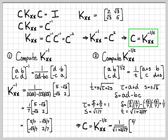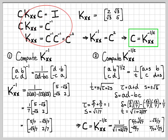K to the negative one-half equals (1/t) times [a+s, b; c, d+s], and that is our final answer for matrix C. You can verify with a calculator that C times K_xx times C equals the identity. Notice also that this C matrix has the complex conjugate symmetry we wanted — its conjugate transpose equals itself. This is one algebraic way to diagonalize a covariance matrix. In the next video, we'll solve the same problem using eigenvalues and eigenvectors.